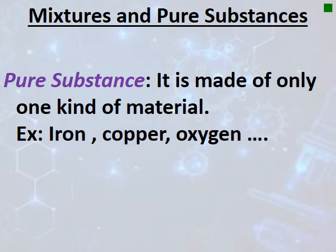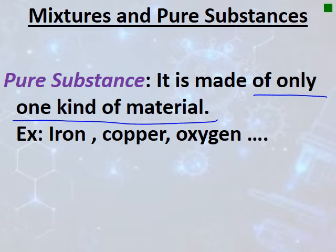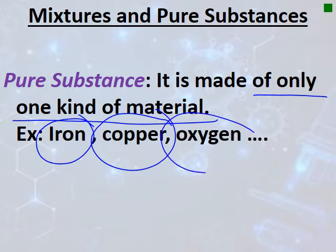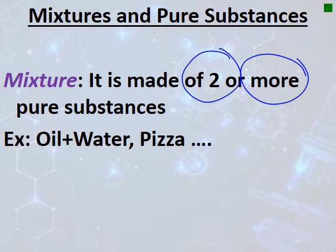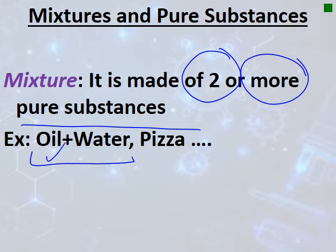Now let's talk about mixtures and pure substances. A pure substance is made of only one kind of material. Examples include iron, copper, and oxygen. A mixture, however, is made up of two or more pure substances — for example, oil and water is composed of two components.